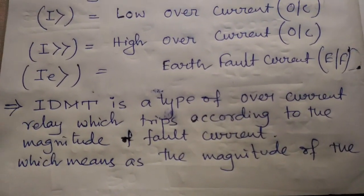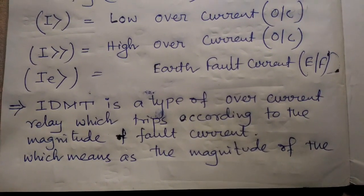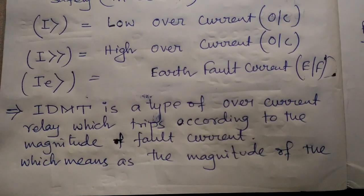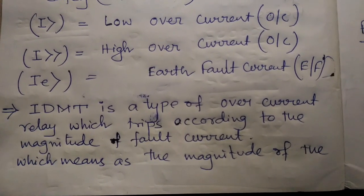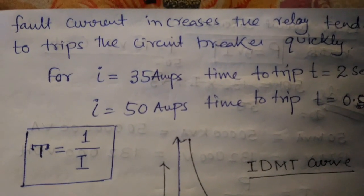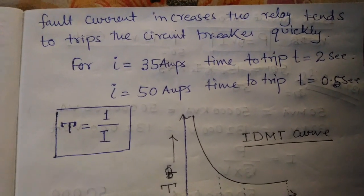What is IDMT? IDMT is a type of overcurrent relay which trips according to the magnitude of the fault current. This means as the magnitude of fault current increases, the relay tends to trip the circuit breaker quickly.